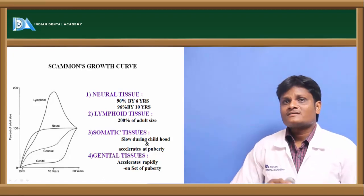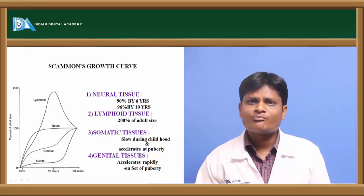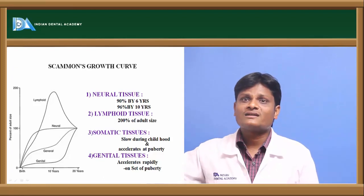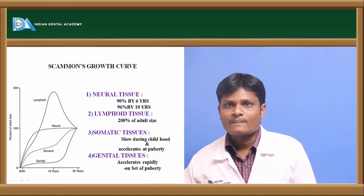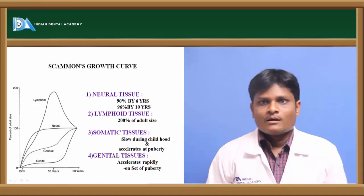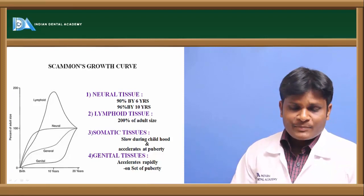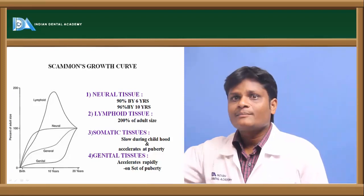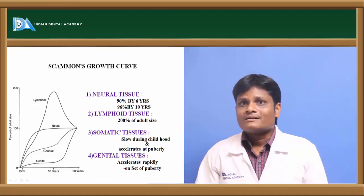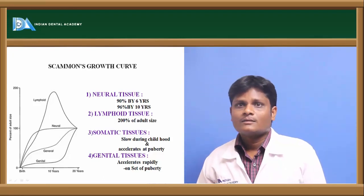Genital tissues show no significant growth until puberty, at which point there is a rapid increase, development, and maturation of genital tissues, after which growth stabilizes. Somatic or general tissues such as muscles and bones do not grow at a constant pace — there are periods of rapid growth followed by periods of constancy, giving a sigmoid-shaped curve on the growth graph.